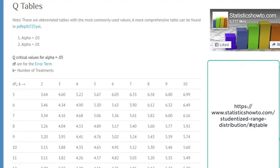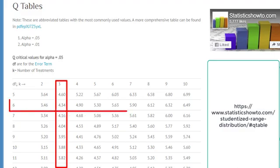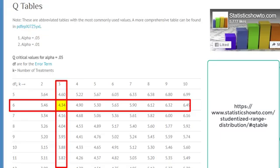With 3 treatments and 6 degrees of freedom for the error term, the Q value is 4.34.